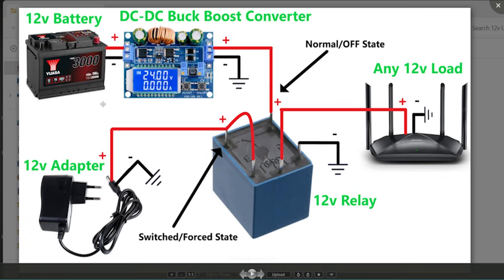Let's understand how this relay is switching between these two power sources to continuously run this load. Suppose we name this pin of the relay as A, this pin as B, this pin as C, and this pin as 1 and this pin as 2. The pin 1 and pin 2 of the relay are connected to the coil, which when activated switches pin C between pin B or pin A.